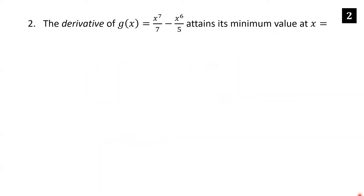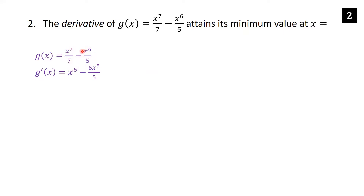The derivative of g of x equals x to the 7th over 7 minus x to the 6th over 5 attains its minimum value at x equals? So first, let's take the derivative of g of x. This is just two power rules. The 7 comes down, cancels with the 7 in the denominator, giving us x to the 6th. And here, the 6 comes down — no cancellation — giving us 6 over 5 times x to the 5th.